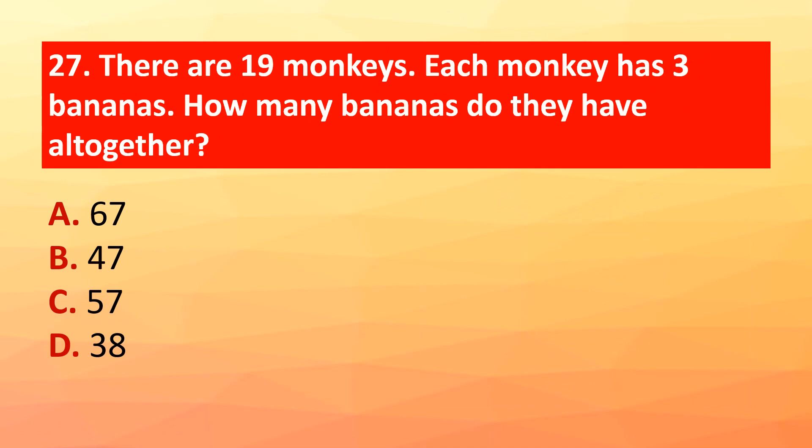Question 27: There are 19 monkeys and each monkey has 3 bananas. How many bananas do they have altogether? The correct answer is option C: 57.